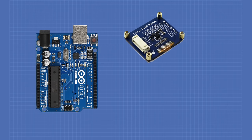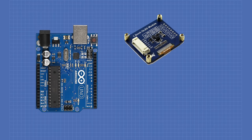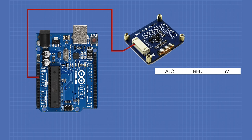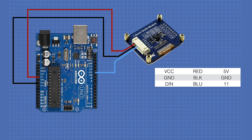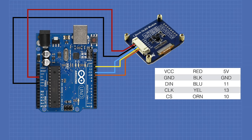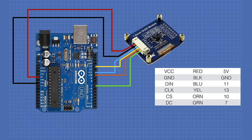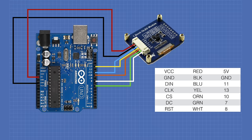I'm going to use the connector that Waveshare provided to connect the display to the Arduino. Using the cable, the connections are as follows: VCC (red wire) to Arduino 5 volt output; ground (black wire) to Arduino ground; DIN (blue wire) to Arduino pin 11; CLK (yellow wire) to Arduino pin 13; CS (orange wire) to Arduino pin 10; DC (green wire) to Arduino pin 7; and RST (white wire) to Arduino pin 8.